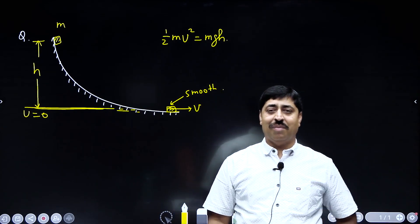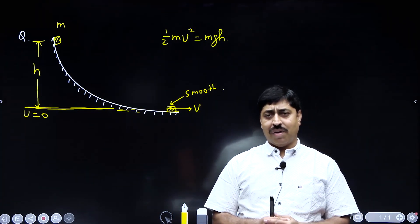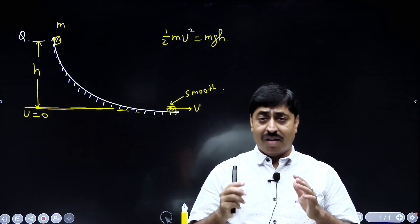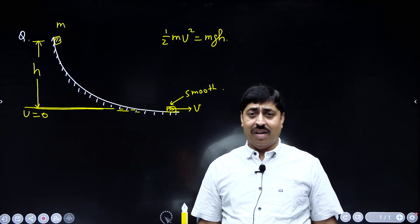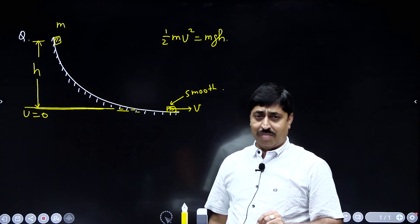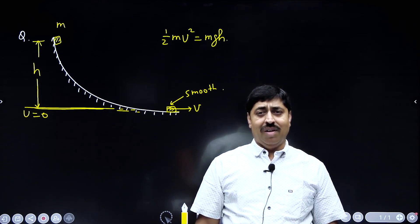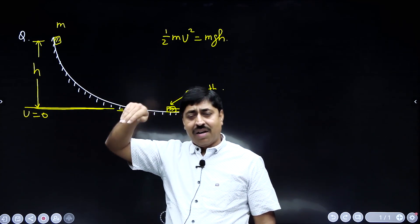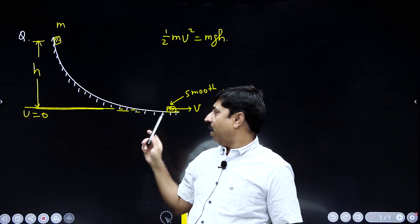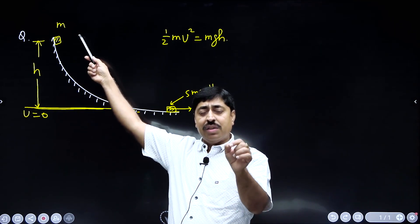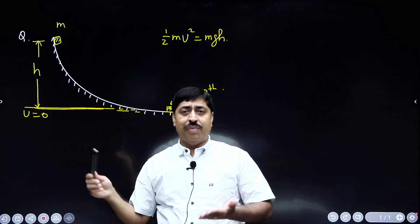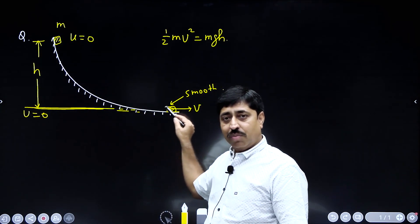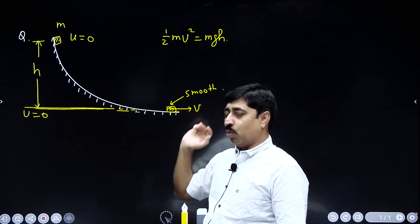Hello students, here is a very conceptual problem based on the work-power-energy chapter. You are not supposed to do any calculation here, but you must have a very clear understanding of the work-energy theorem or the mechanical energy conservation rule to answer this question. This is a vertical track which is very smooth — there is no friction — and a block of mass m is released on this track from a height h above the horizontal ground. This block is released from rest; it slides down and reaches the lowest portion, that is the horizontal portion.